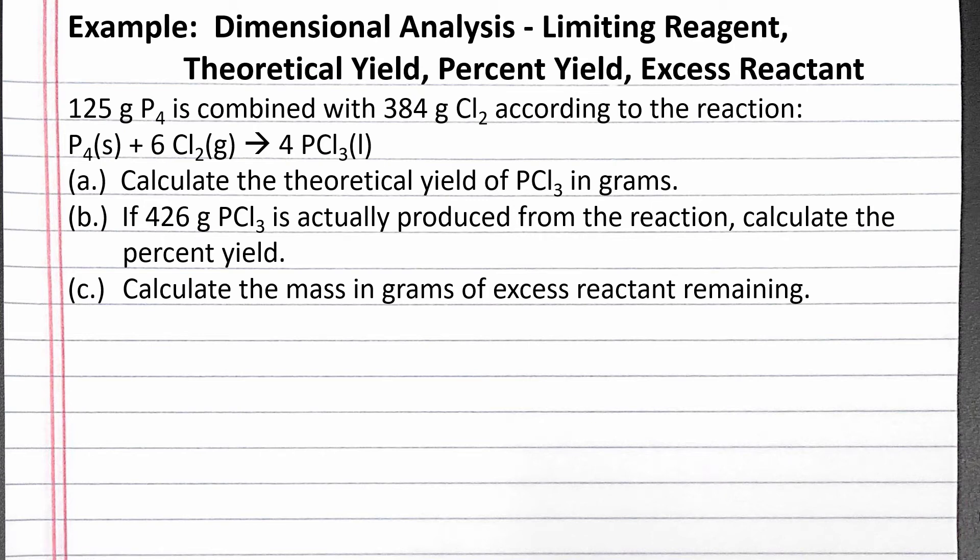In this example problem, we use dimensional analysis to find the limiting reagent and calculate the theoretical yield, percent yield, and excess reagent remaining. Our problem reads: 125 grams P4 is combined with 384 grams Cl2. According to the reaction, P4 solid plus 6 Cl2 gas produces 4 PCl3 liquid.